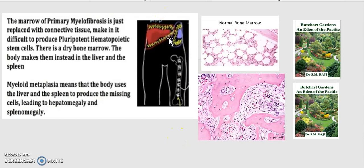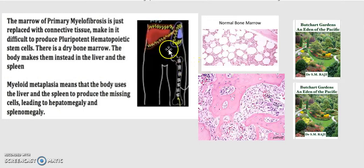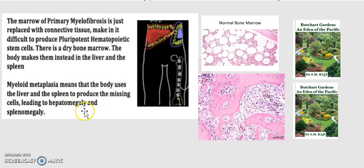There is a dry bone marrow, so the body makes stem cells instead in the liver and the spleen. Production is shifted away from the normal bone marrow to the liver and the spleen — this is known as myeloid metaplasia, meaning the body uses the liver and spleen to produce the missing cells.